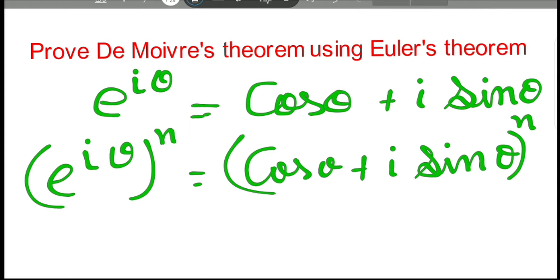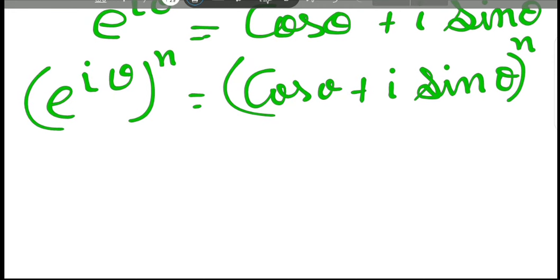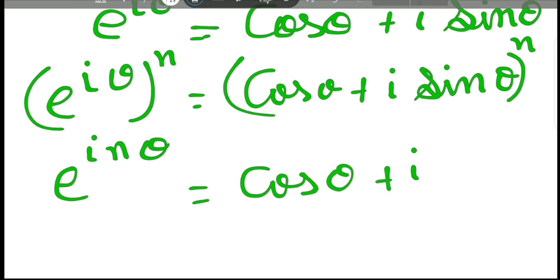By the law of indices, e to the power i theta to the power n — that is your left hand side — is just e to the power i n theta, because powers can be multiplied by the law of indices. And the right hand side, let's just write it as it is.